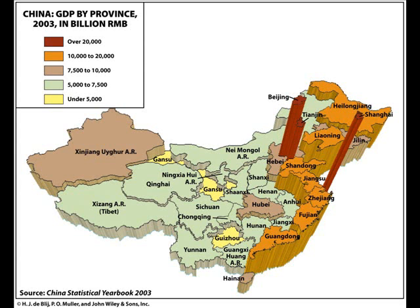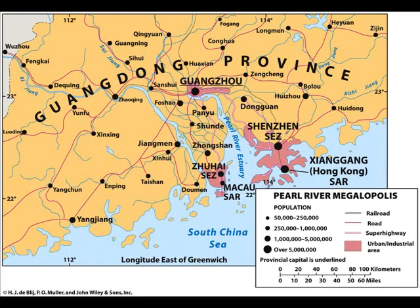If we look along the Pacific coast of China, we can see where most of the economic development is occurring. This is a prism map where each province has been raised according to its gross domestic product in billions of renminbi, the Chinese currency. We have over 20,000 billion renminbi in the Beijing province and the Shanghai province — very important provinces. Here we have the Guangdong province and the Pearl River estuary, with Guangzhou to the north, Shenzhen and Hong Kong to the east, and Macau and Zhuhai — a special economic zone — to the west on the western bank of the Pearl River estuary.